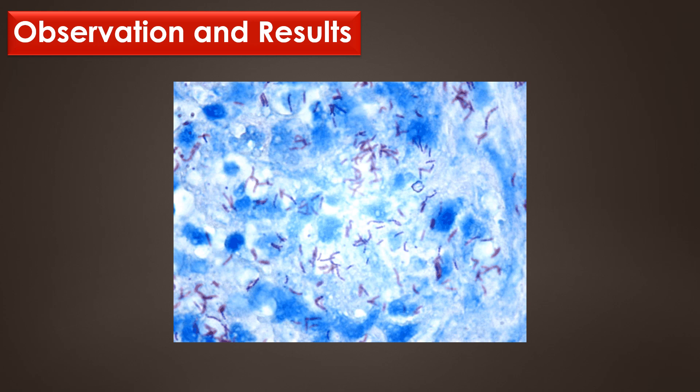This image shows the acid-fast and non-acid-fast bacilli. The red-colored rods show the acid-fast bacilli and the blue-colored cells show the non-acid-fast bacilli.